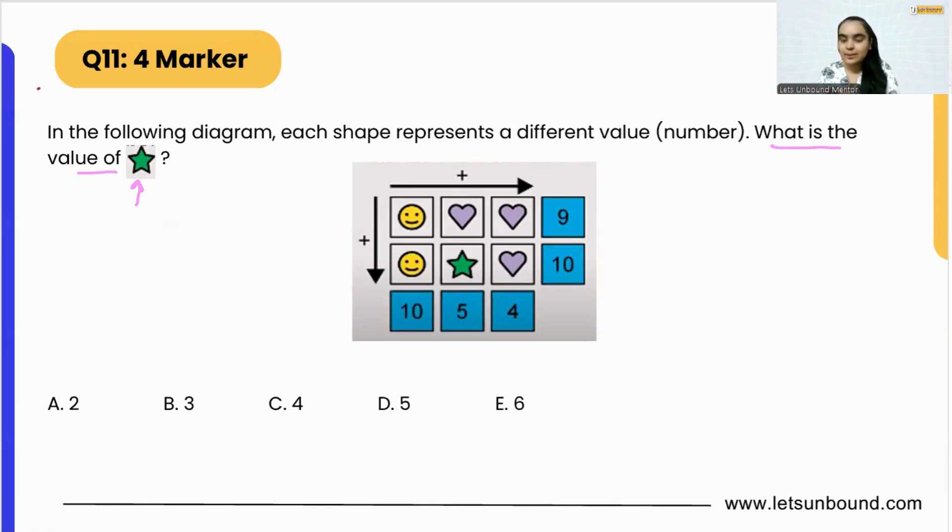Now in such type of questions, always remember to start with a row or a column which is having same figures, same shapes. For example, I can see in this column I'm having heart and a heart that equals four, right? What does this figure represent?